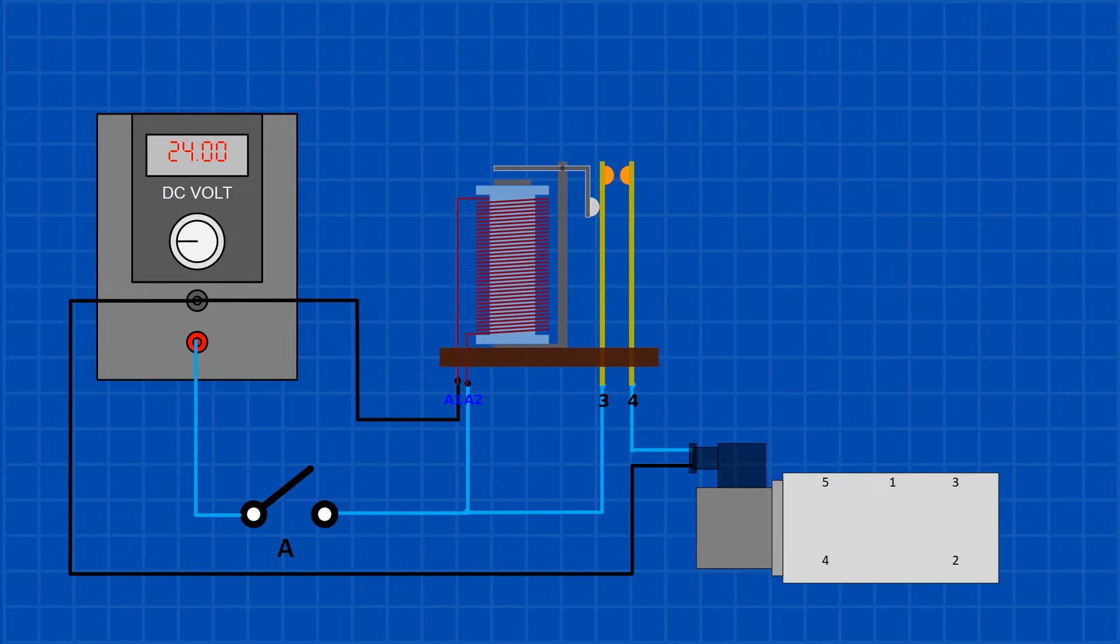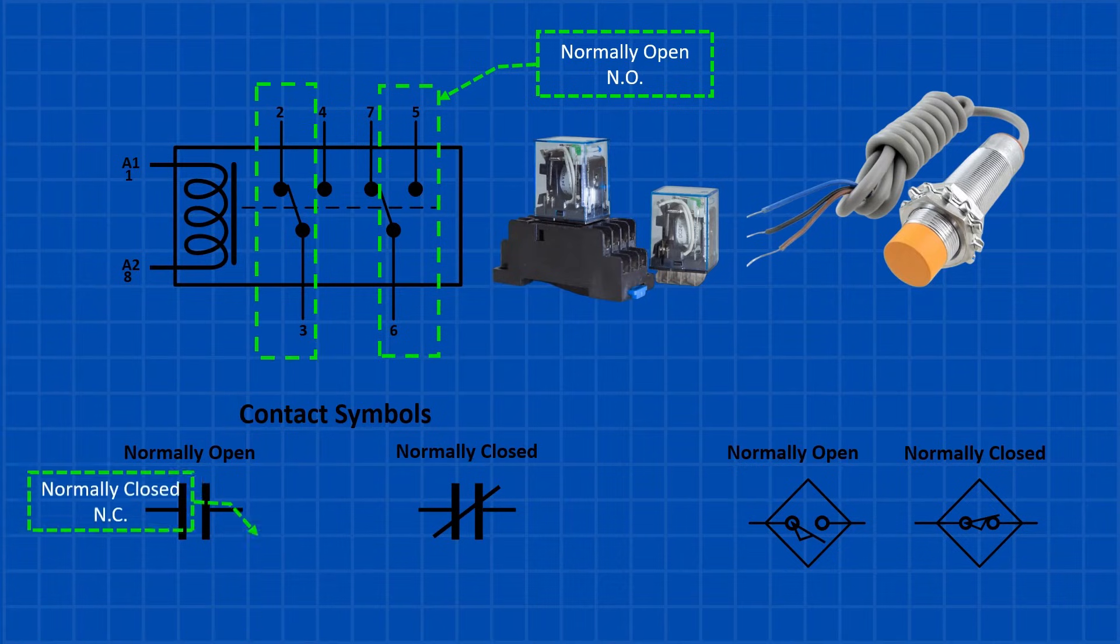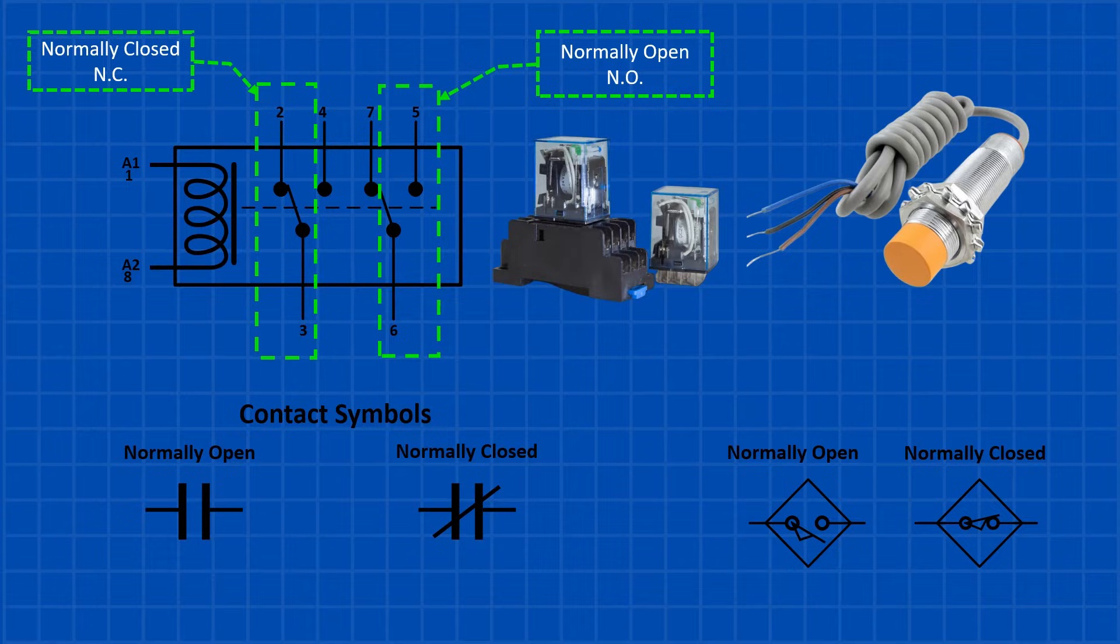When it comes to relays, we need to understand normally open and normally closed contacts. Normally open means the contacts are open when the device is unpowered and they close when it's turned on. Normally closed is the opposite: the contacts stay closed when the device isn't energized and they open when the device is activated. This applies to any kind of input or output device like a proximity switch, a selector switch, or a relay itself.